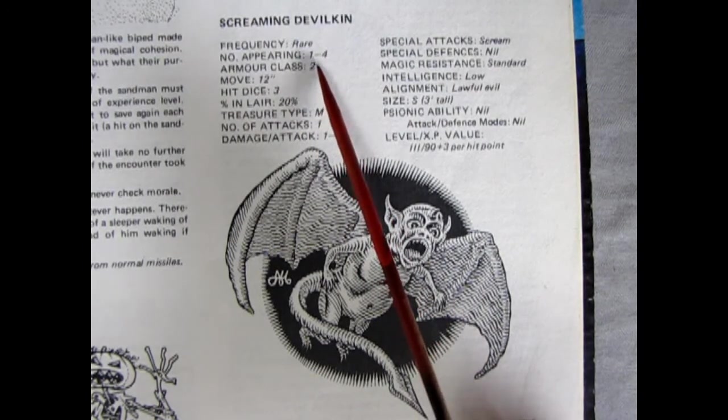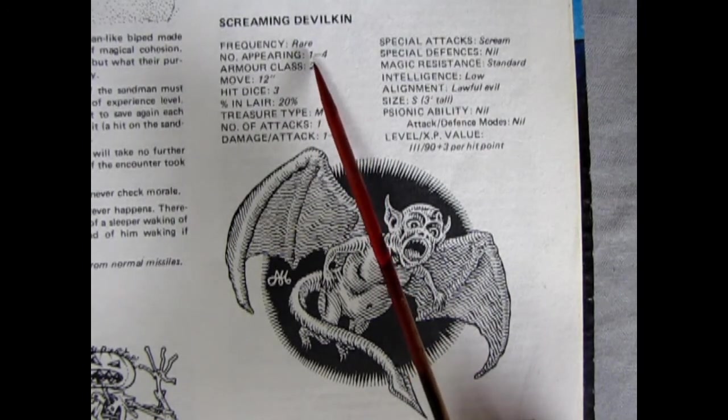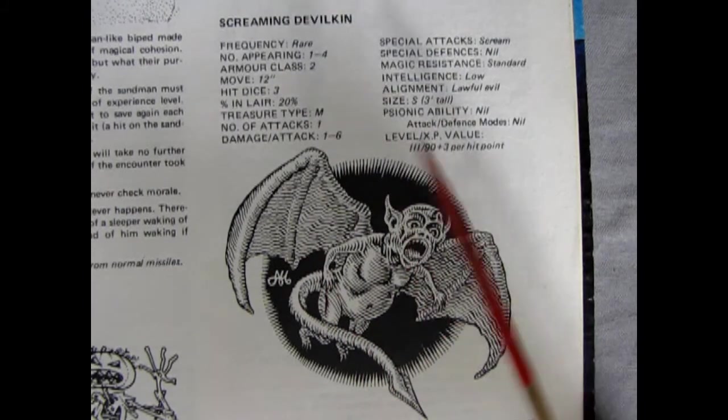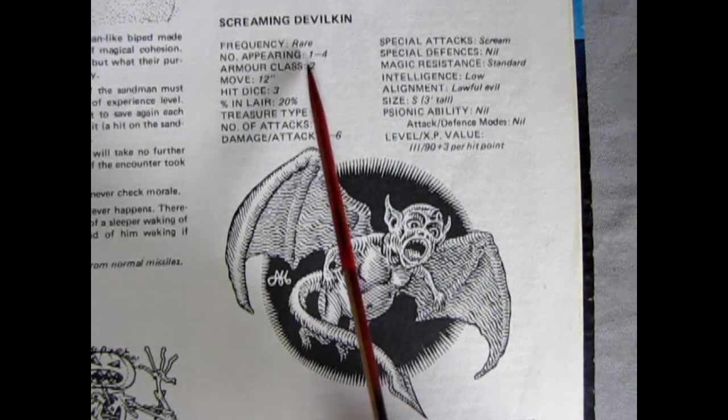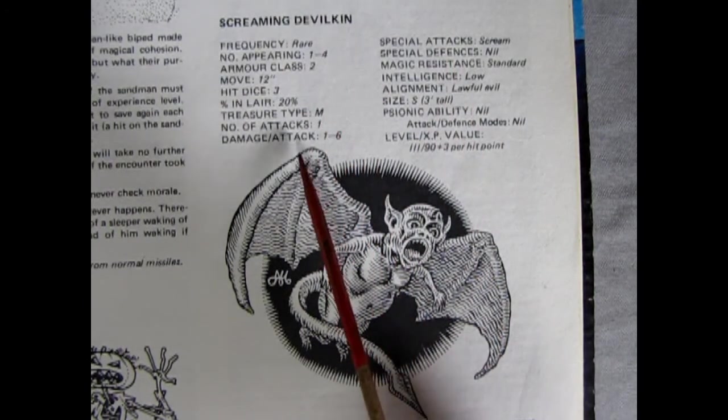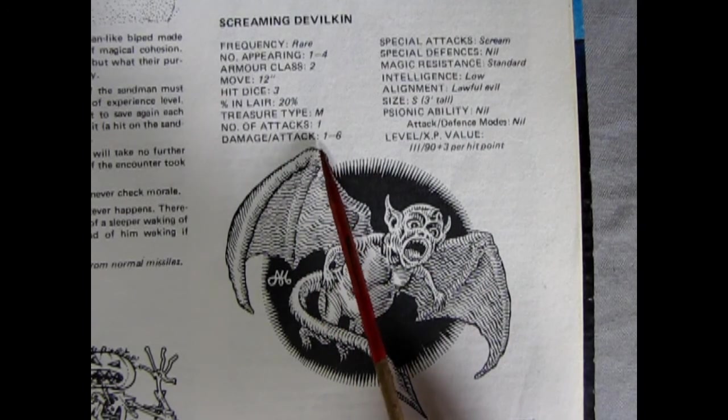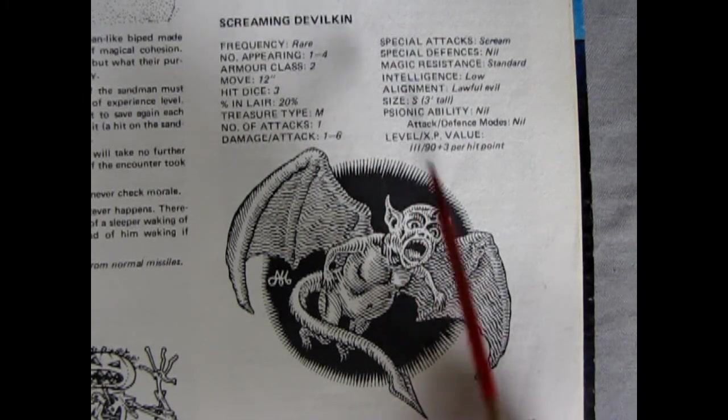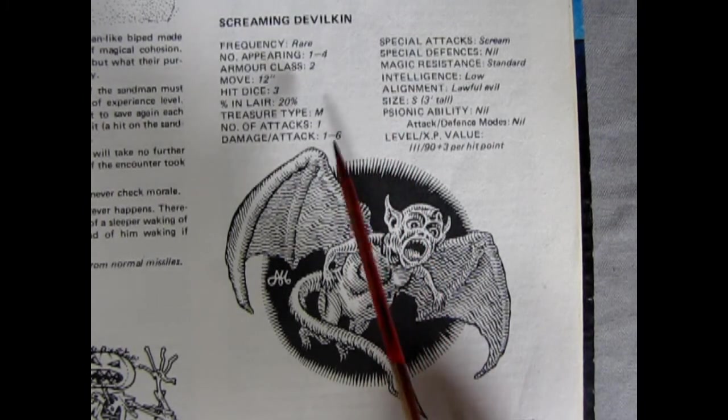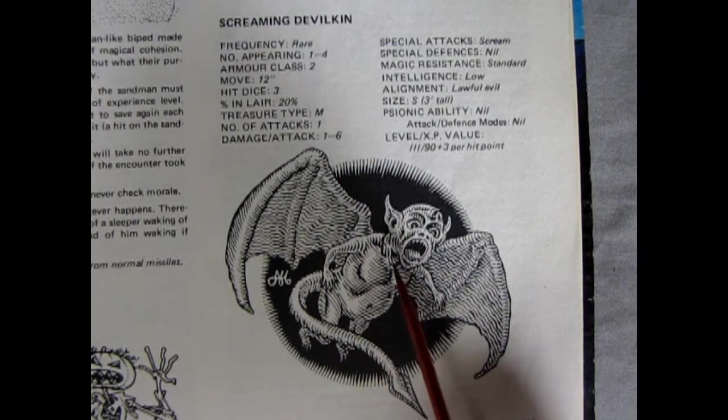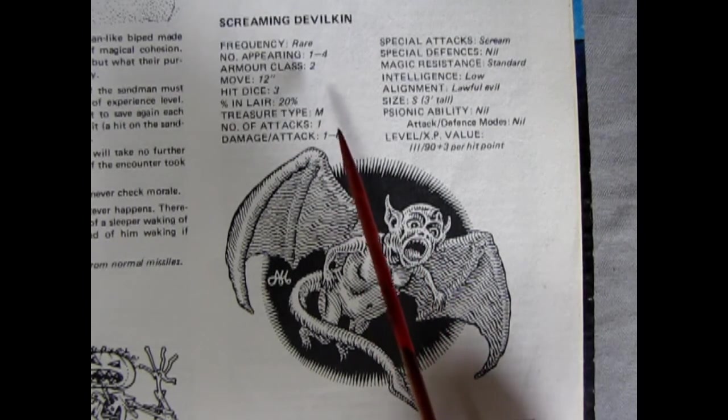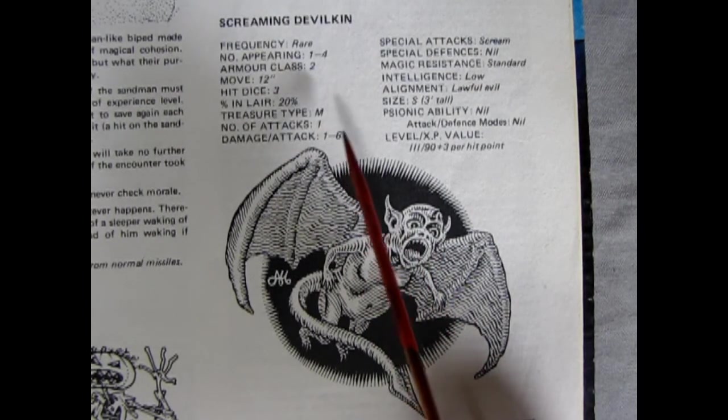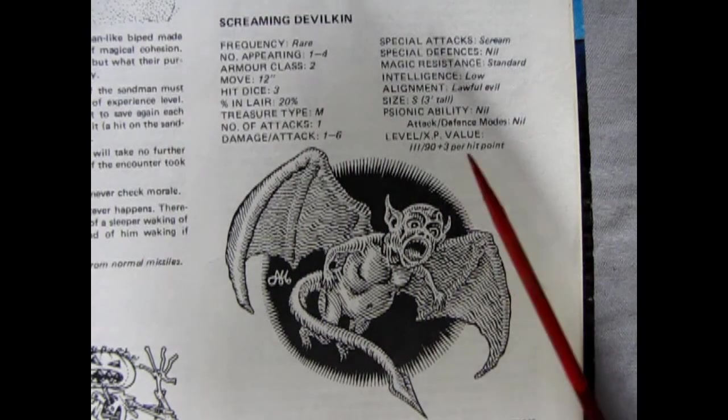So as you see back in the day, it just had 1-4. Nowadays, if this was in a new monster manual, it would probably say 1d4, and then damage would be 1d6 instead of 1-6. So that's how it's changed between the two systems. Well, I guess actually four more systems, because this is first edition, and then now we have second, third, fourth, and fifth came out. So quite a bit of time away.